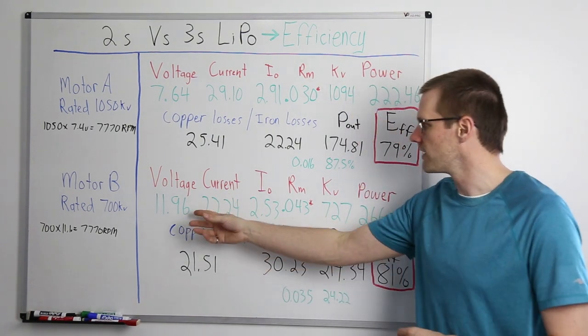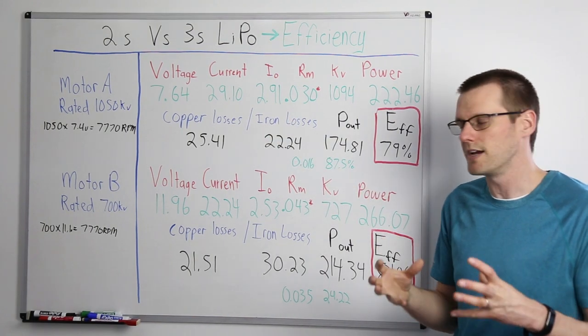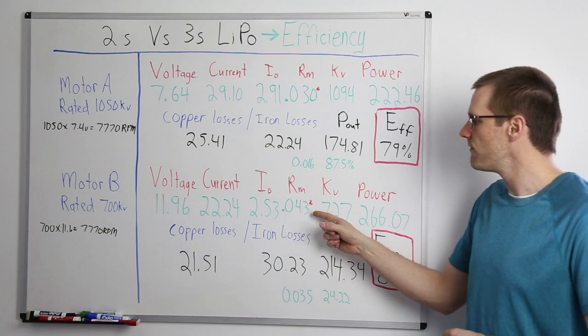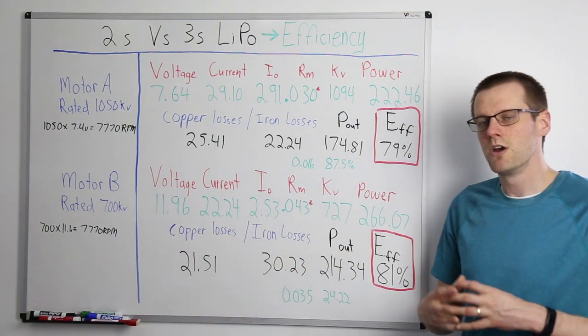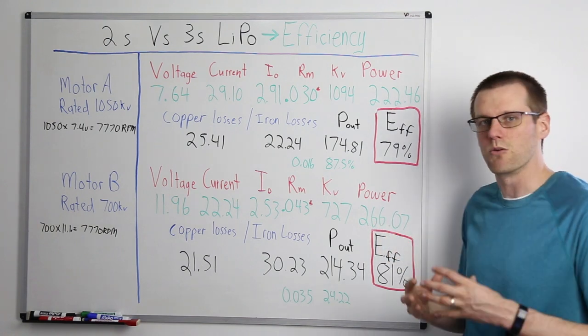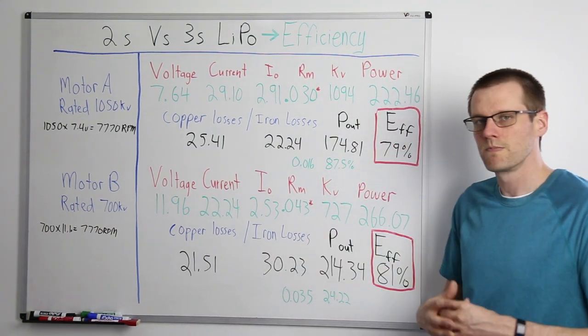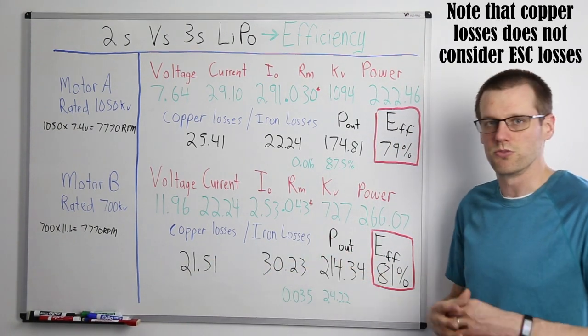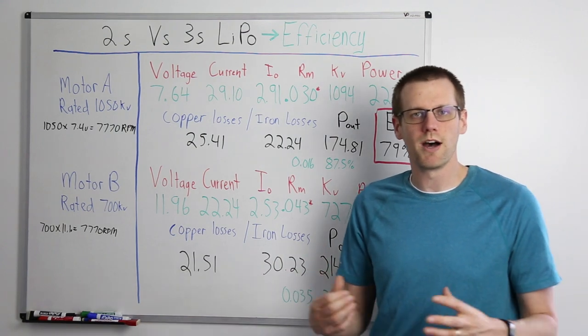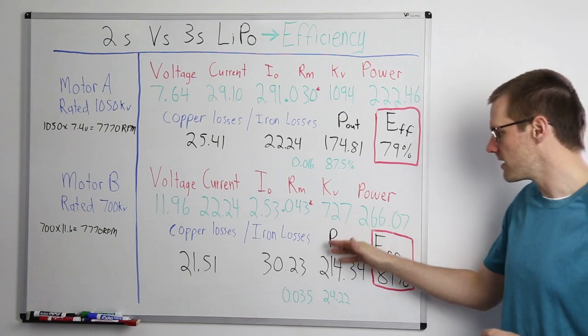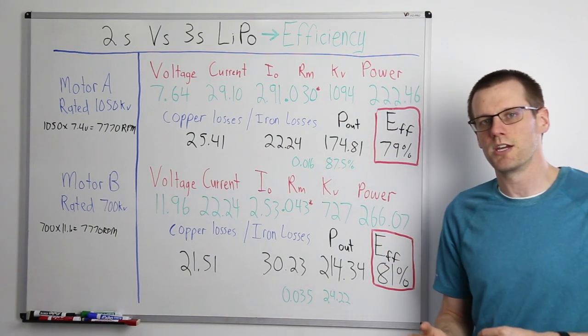Now, we do the exact same thing for motor B. We have voltage of 11.96, current of 22, IO of 2.53. Note that it is smaller than the IO value in motor A, which makes sense. And also that the RM value goes up, 0.043 versus 0.030. And then we have KV coming in a little bit higher than our rated 700, at 727, with a power input of 266.07 watts. Now, we take that 266, the next thing that we're going to do is we're going to have to subtract out our copper and iron losses. We got copper losses of 21.51 watts and iron losses of 30.23 watts. This leaves us with a power output of 214.34 watts of output.